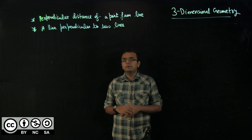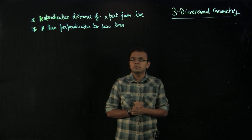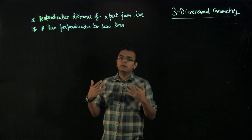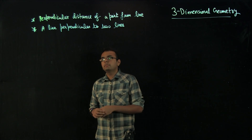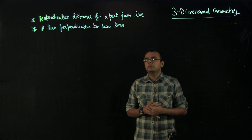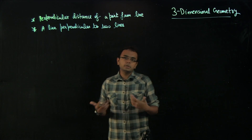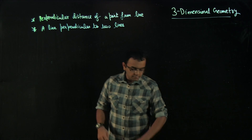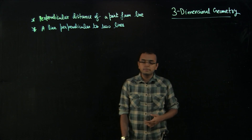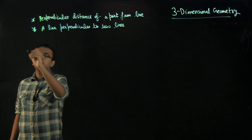Hi everyone. In this video we will be talking about two topics for the 3D chapter for mathematics and IIT-JEE preparation. The topics are dealing with finding the perpendicular distance of a point from a line, and finding the equation of a line perpendicular to two given lines. These are small topics, however, as with many math topics, this is about learning the approach to solve problems like these. Let us start by finding the perpendicular distance of a point from a line.